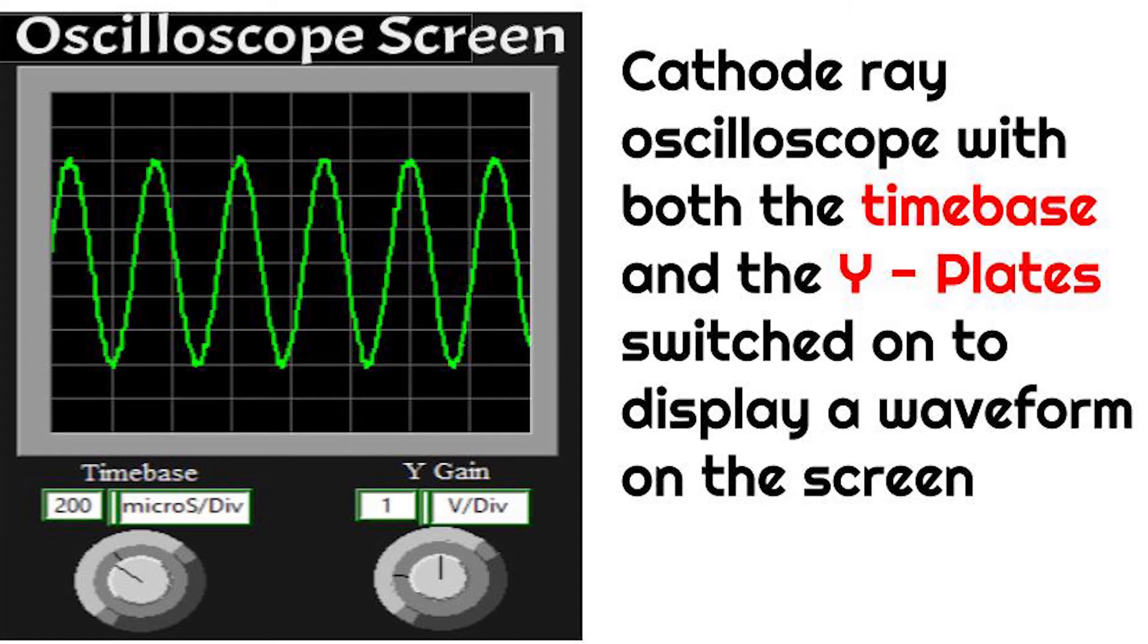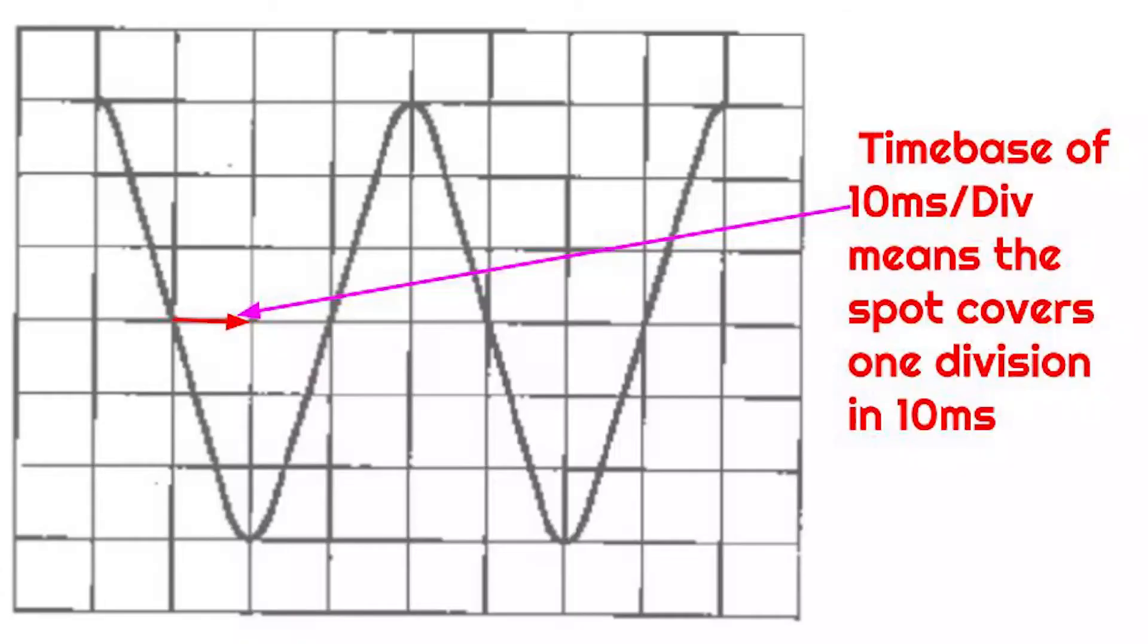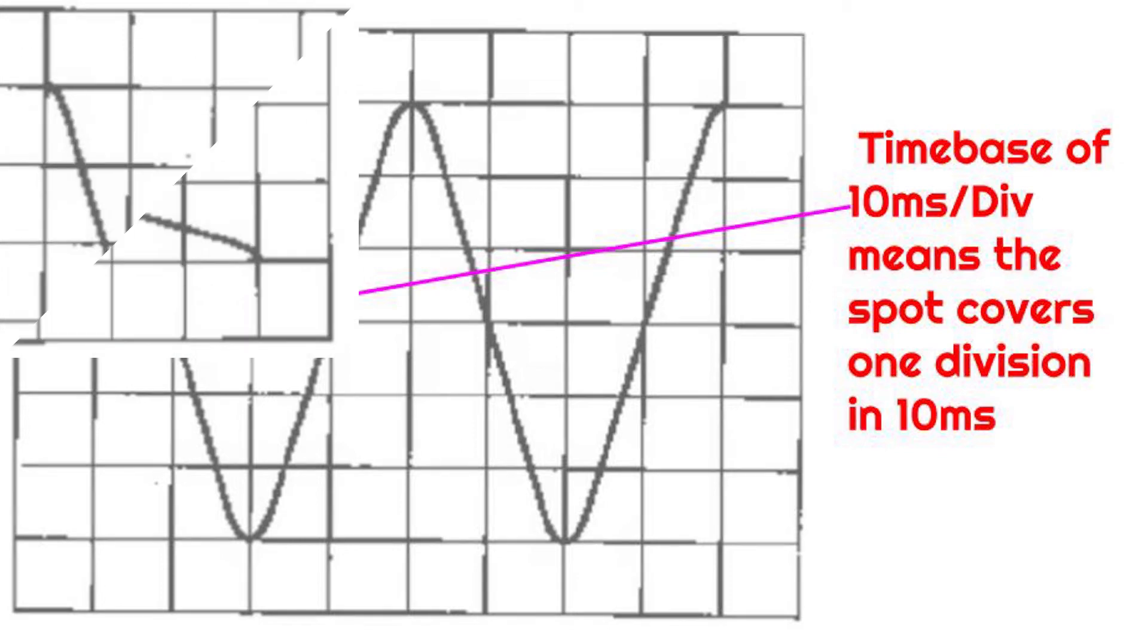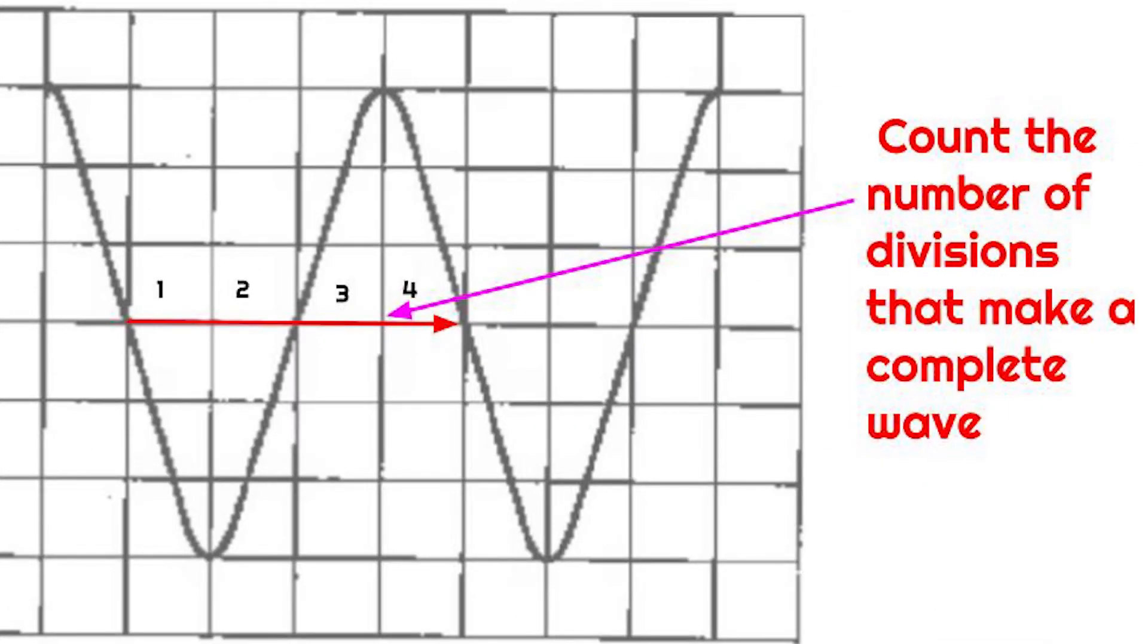The time base control knob is adjusted to give one or more cycles on the screen. If the time base setting is given as 10 milliseconds per division, it means the spot on the screen covers one division in 10 milliseconds. Hence, count the number of divisions covered by the spot to form a complete wave. On the diagram shown on the screen, the number of divisions covered by one cycle is 4.